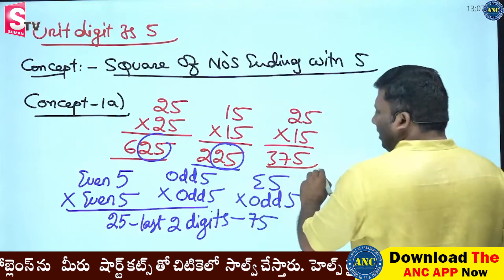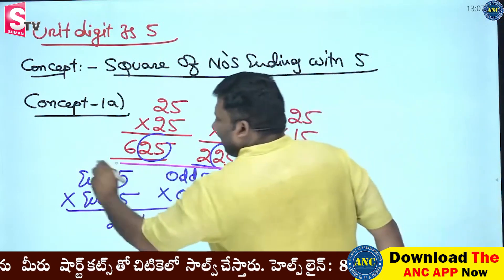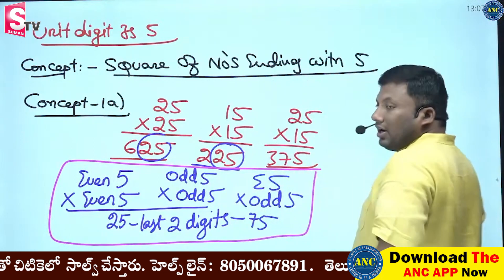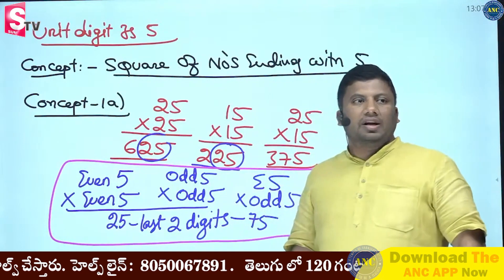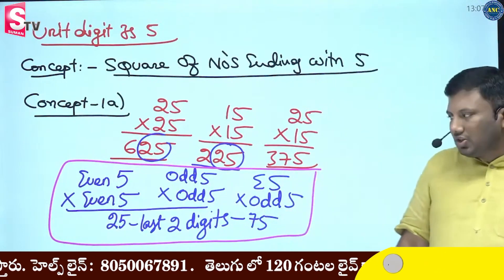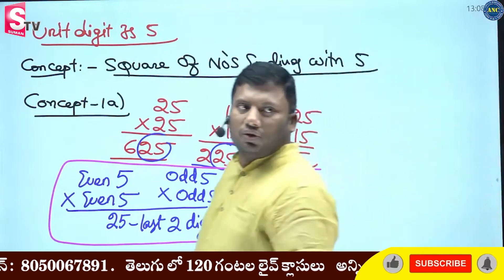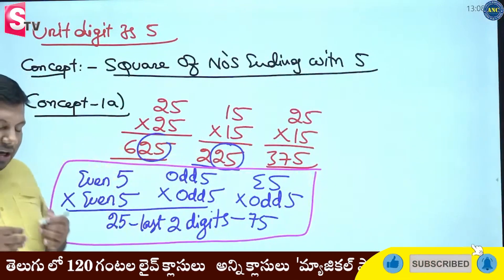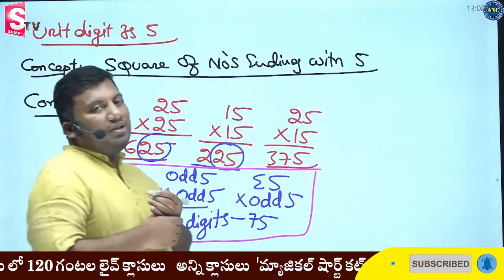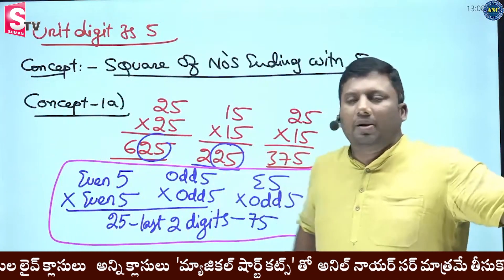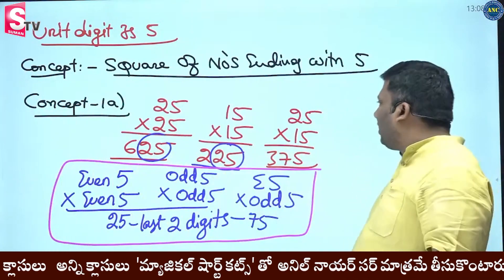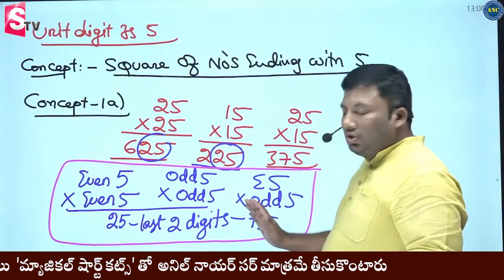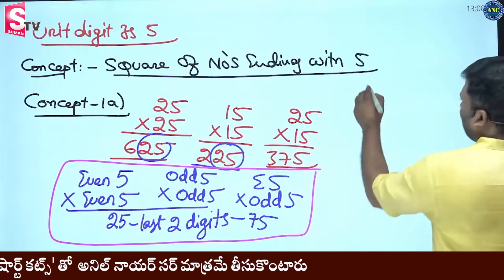This is a very important concept. Two even numbers ending with 5 multiplied together — last two digits are 25. Two odd numbers ending with 5 multiplied together — last two digits are also 25. Otherwise the last two digits will be 75.